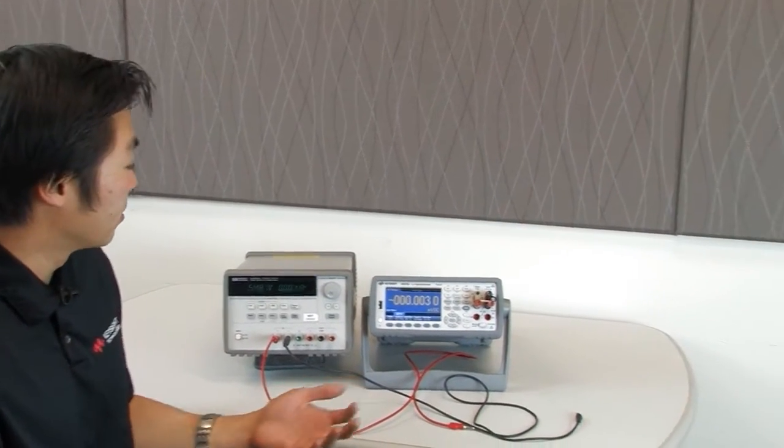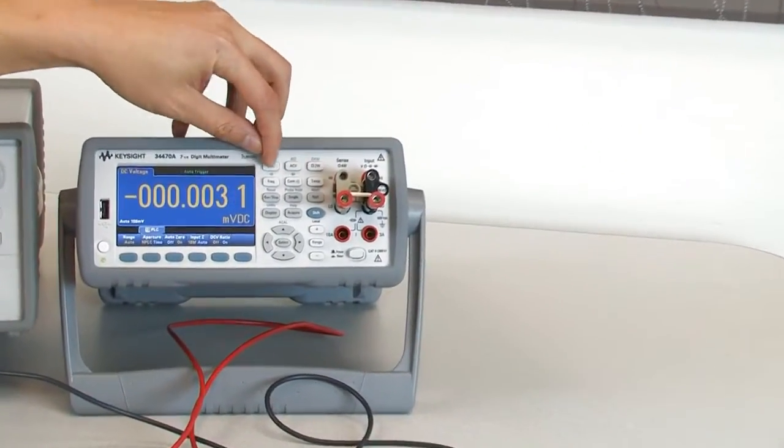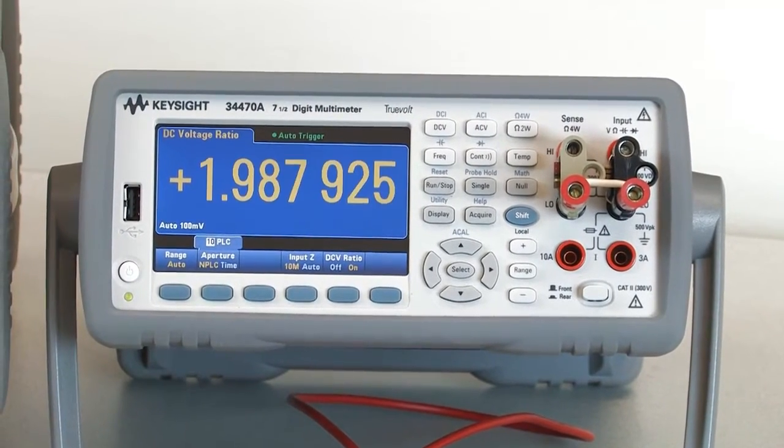So let's go ahead and get started. To start off with, I'm going to configure the DMM into DC volts, and then I'm going to turn on this feature called DC volts ratio.